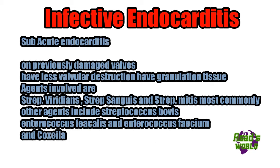Subacute endocarditis happens on damaged valves, not normal valves. It has less valvular destruction and, unlike acute endocarditis, does have granulation tissue. The causative agents include Strep viridans, Strep sanguis, Strep mitis, Streptococcus bovis, Enterococcus faecalis, Enterococcus faecium, and Coxiella.